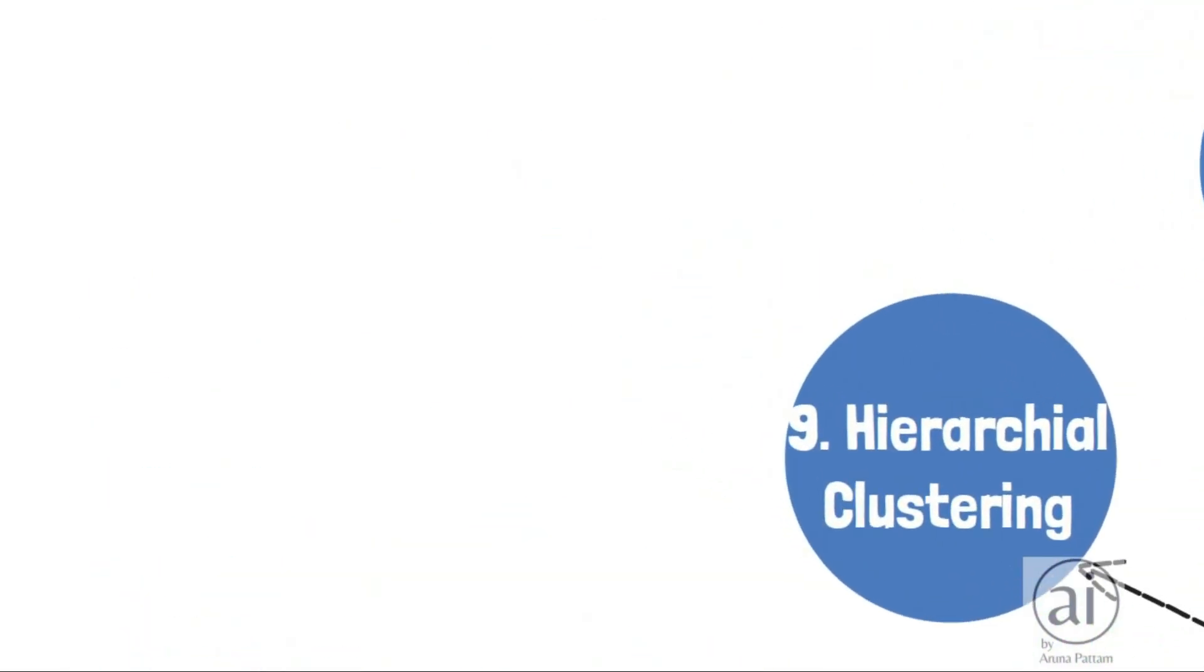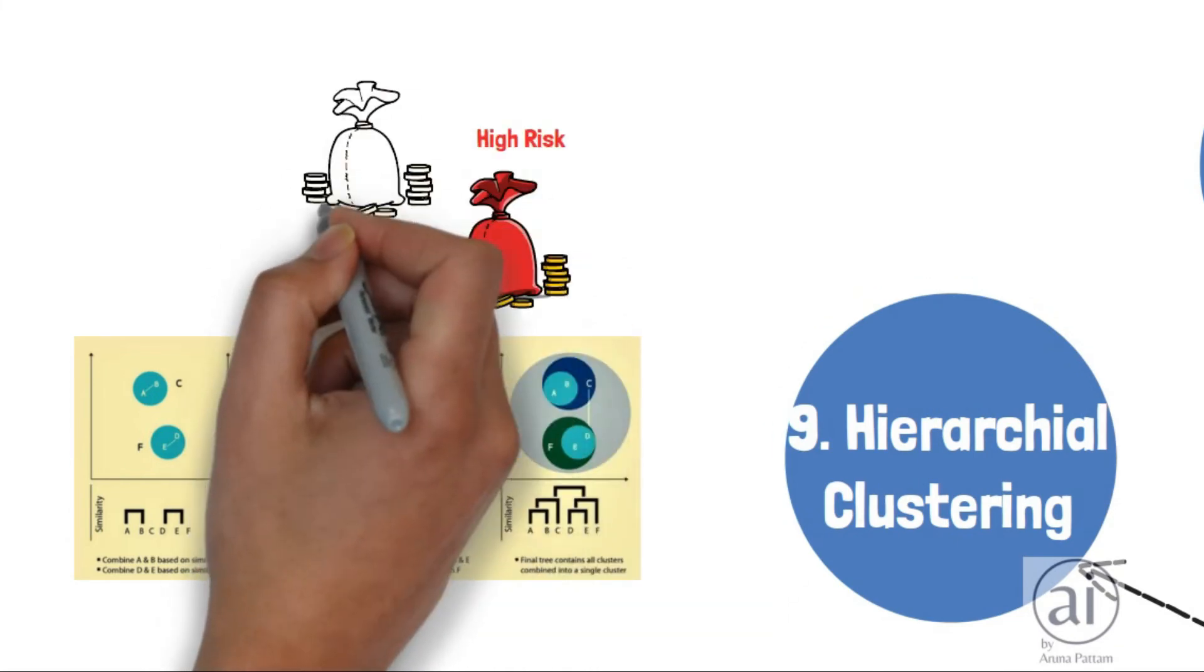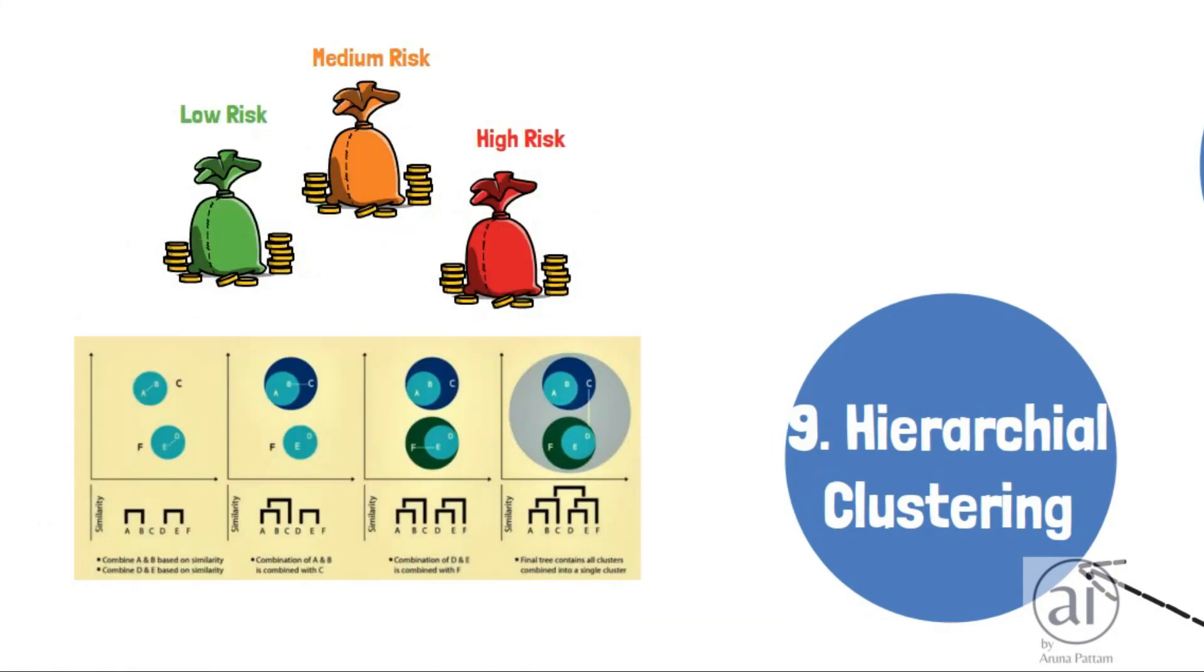Hierarchical clustering: similar to k-means clustering, this method classifies data into clusters based on cluster centroids. For example, grouping loan applicants into high, medium, and low risk based on attributes.